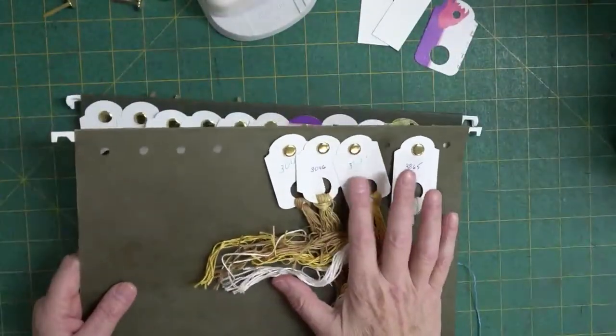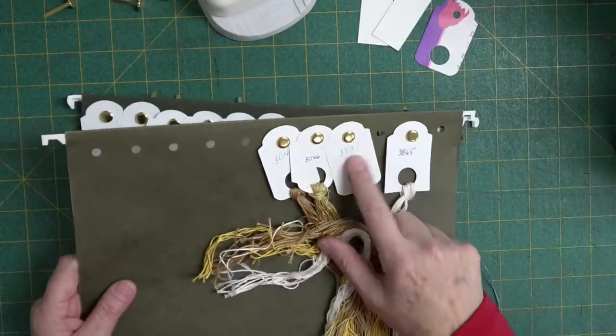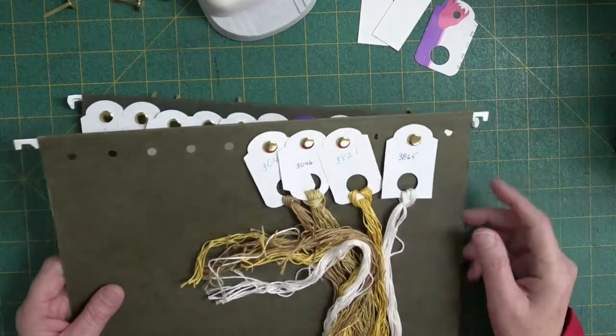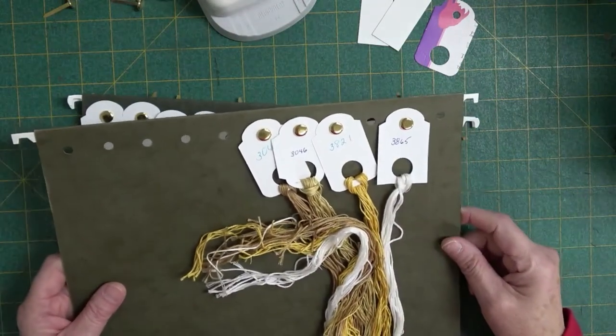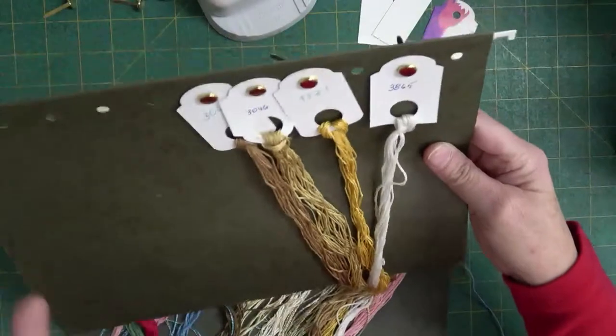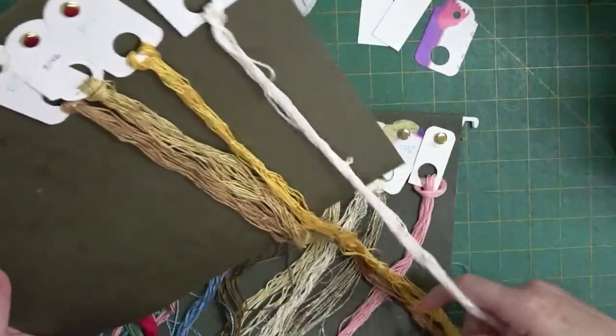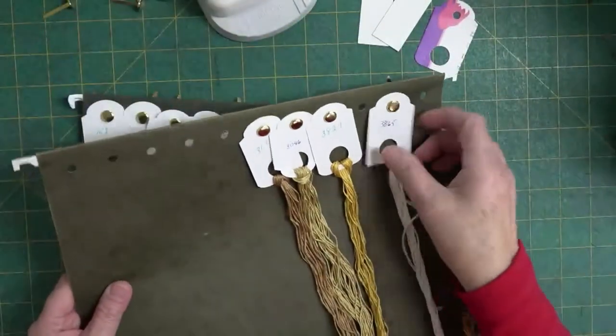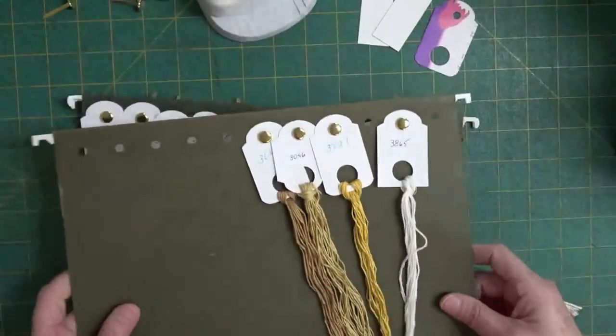That's why I've never used this system in the past with these little tags, because the tangling drove me crazy. But I don't think they'll tangle too bad. You know, floss is pretty good about—if you have it bound on a tag you can just pull it away from the rest of them.